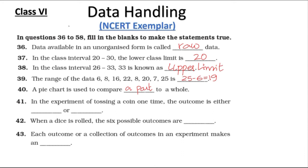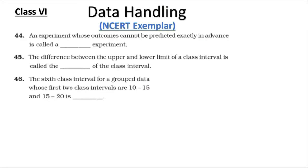Question 41: In the experiment of tossing a coin one time, the outcome is either head or tail. Question 42: When a dice is rolled, 6 possible outcomes are the numbers from 1 to 6. Question 43: Each outcome or collection of outcomes in an experiment makes an event.